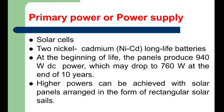During eclipse, power is provided by two nickel-cadmium long-life batteries. At the beginning of life, the panel produces 940 watts DC power, which may drop to 760 watts at the end of 10 years. Higher powers can be achieved with solar panels arranged in the form of rectangular solar cells.